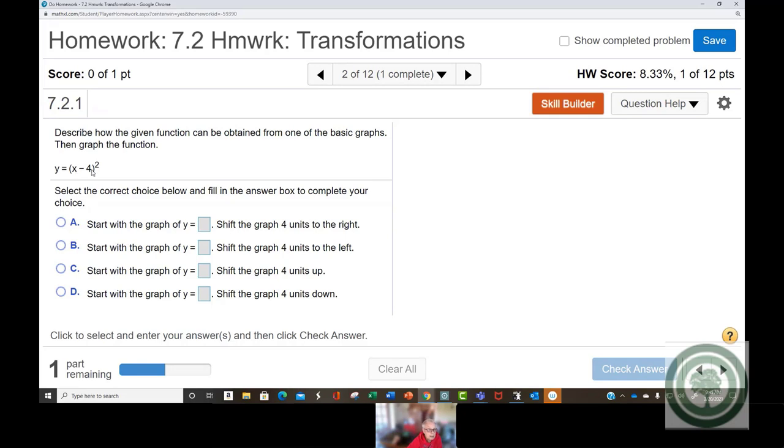Well, here you've got an x square. So, the basic function is going to be x squared. Now, notice that this minus 4 is in parentheses with the x. It's trapped with the x. Therefore, it's a horizontal shift. It'll be horizontal something.